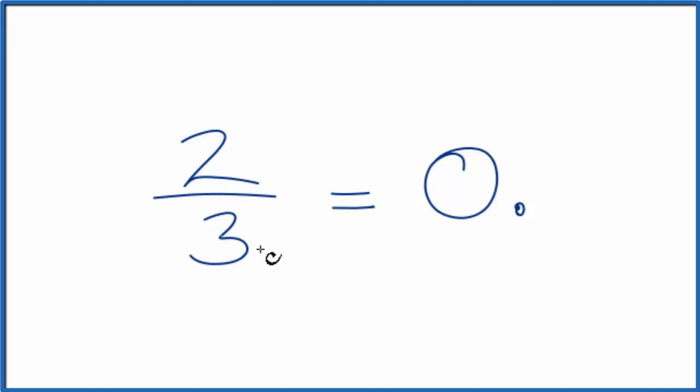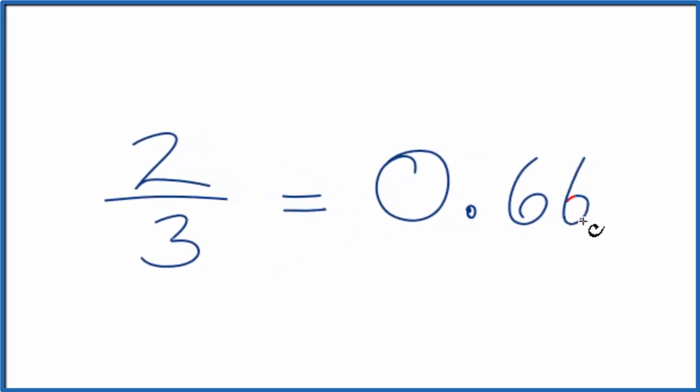If we type 2 divided by 3 into our calculator, we'll get 0.66, and that 6 will repeat. So we could just write it like this. So two-thirds as a decimal is 0.6 with the 6 repeating.